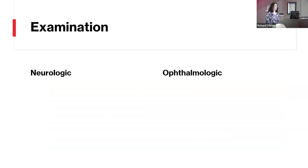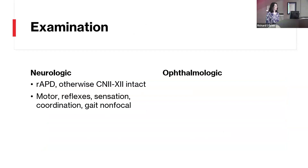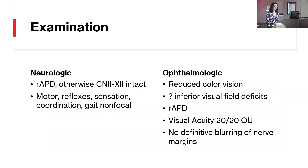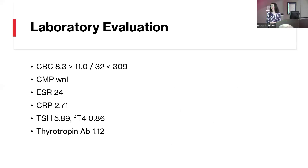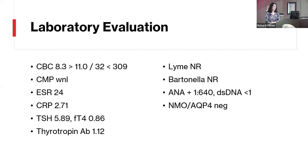In addition to us, our ophthalmologic colleagues were also involved. Our exam showed a relative afferent pupillary defect in that eye but was otherwise normal and non-focal. The ophthalmologic exam had concern for reduced color vision, perhaps inferior visual field deficits, and an APD in that eye; otherwise visual acuity was 20/20 bilaterally with no definitive blurring of the nerve margins. Workup showed mild anemia, mild elevation of inflammatory markers, and normal thyroid studies. An infectious and rheumatologic workup came back normal.